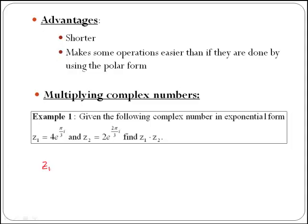If we just write it, z1 times z2, then we have 4e^(πi/3) times 2e^(2πi/3). In order to multiply this expression, we are going to multiply numbers with numbers. So 4 times 2, which will give you 8.